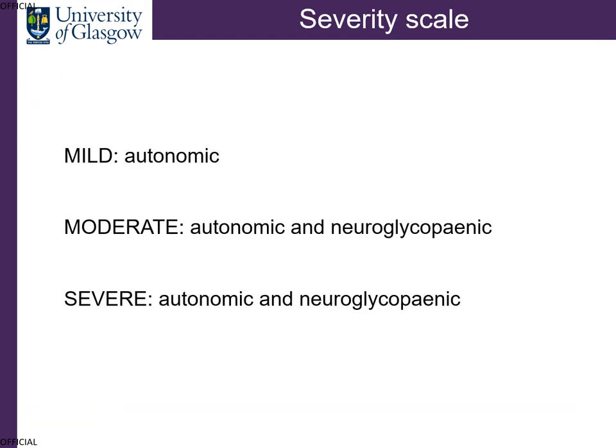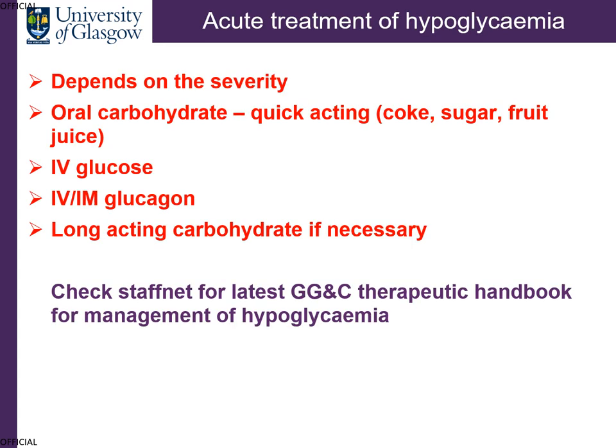The severity of hypoglycemia is classed as mild — just autonomic symptoms; moderate — a mixture of autonomic and neuroglycopenic symptoms; and severe — when cognition is very impaired and the patient is close to coma. Treatment of hypoglycemia depends on the severity, your access to carbohydrate, and the patient's ability to follow the treatment algorithm.